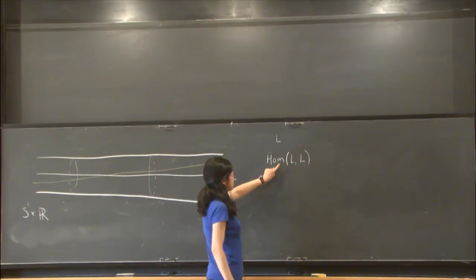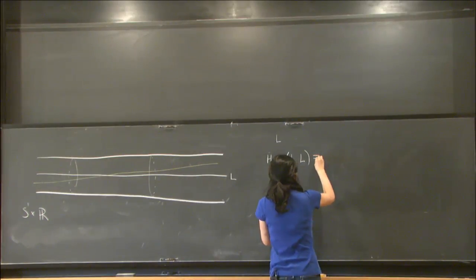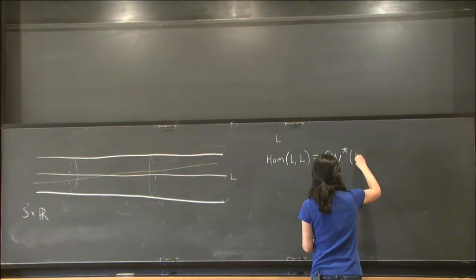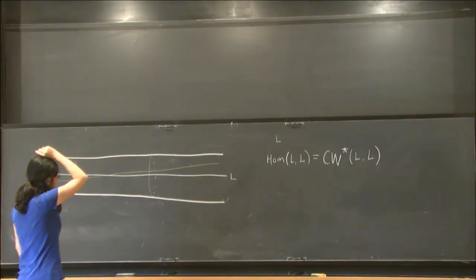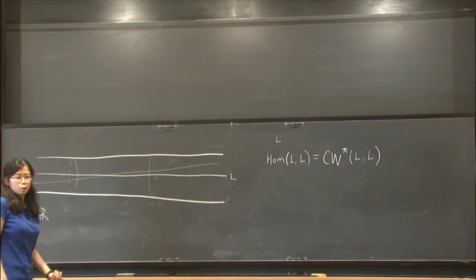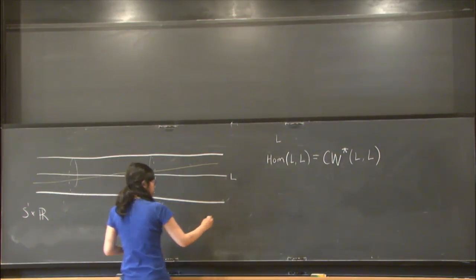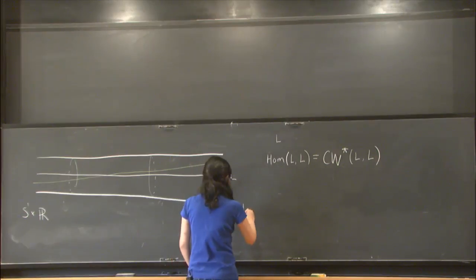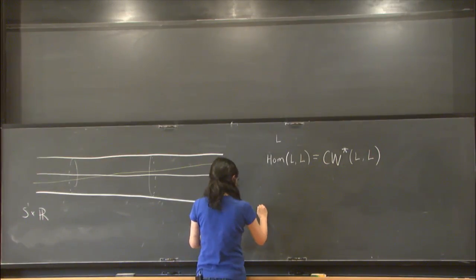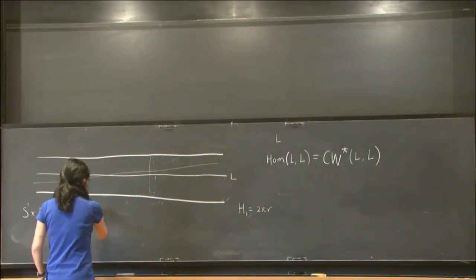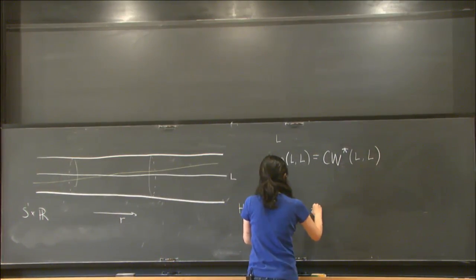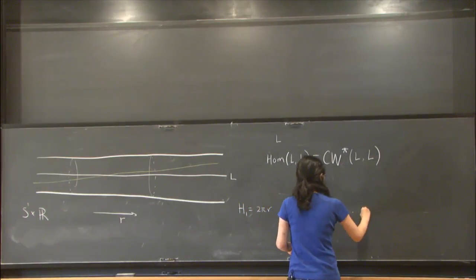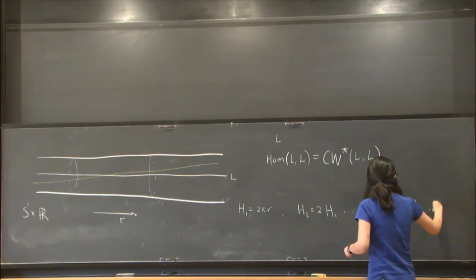And how do we define the morphism complex in the wrapped Fukaya category? It's going to be the wrapped Floer complex between L and L. And let me spend a couple minutes defining that. So in order to define the wrapped category, we need to pick a Hamiltonian perturbation. So the Hamiltonian perturbation, I'm going to pick actually a sequence of Hamiltonian perturbations. Let's just say H1 is 2 pi r. So r is in this direction. And then the S1 is in the theta. And then, so there are H2s, which is just 2 times H1 and so on. Hn is n times H1 as n goes to infinity.